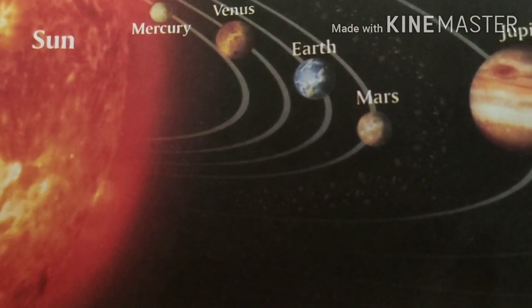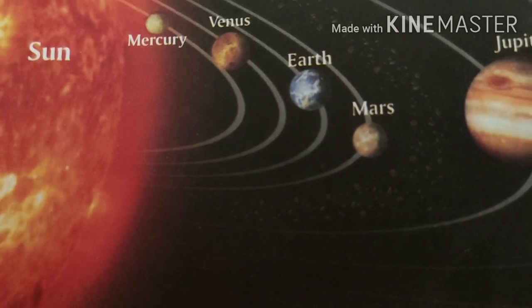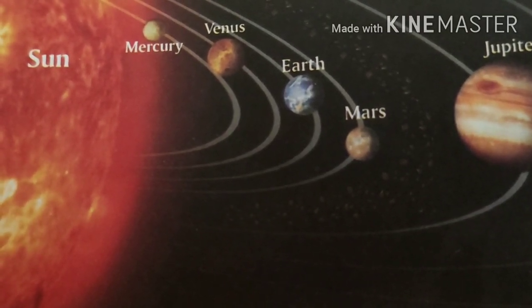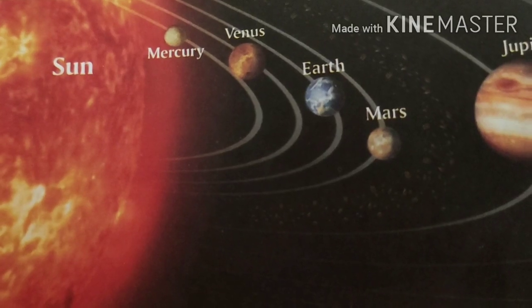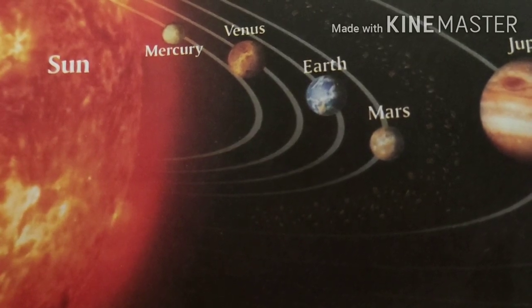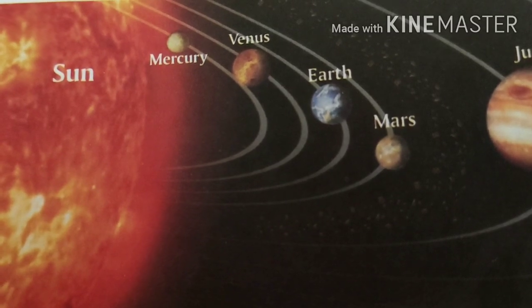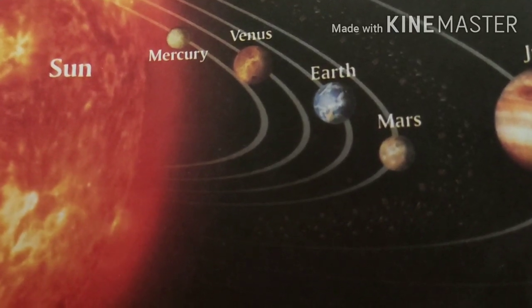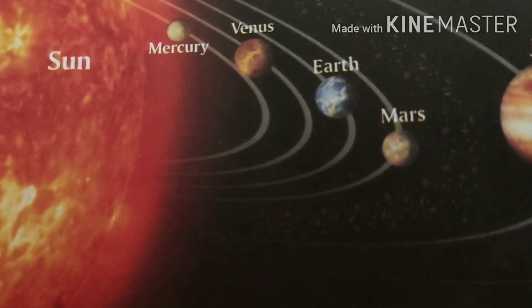The Earth would become a cold and lifeless planet if it were situated far from the Sun or if the Sun were absent. Earth is at the third position from the Sun, and that is why life exists here. Earth is a unique planet because of the heat and light it receives from the Sun.